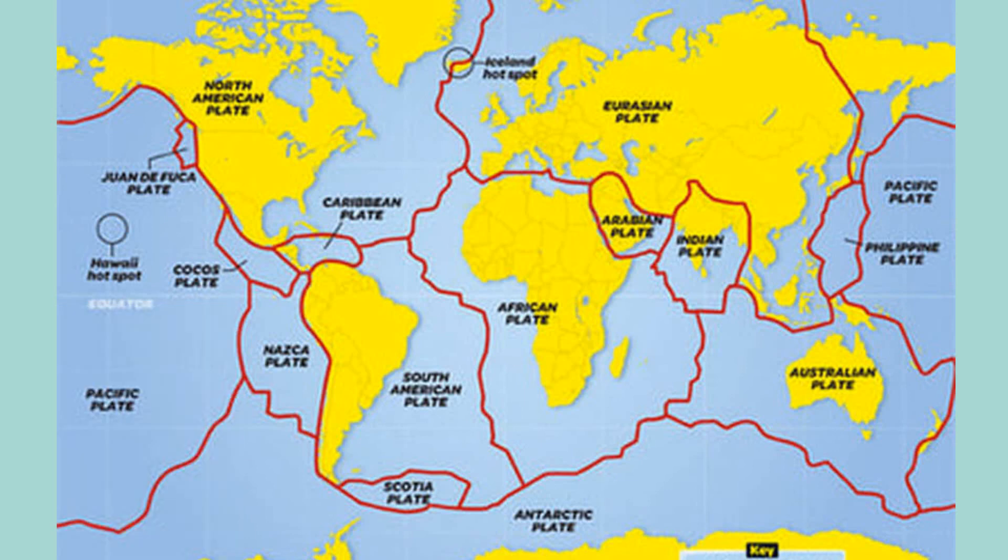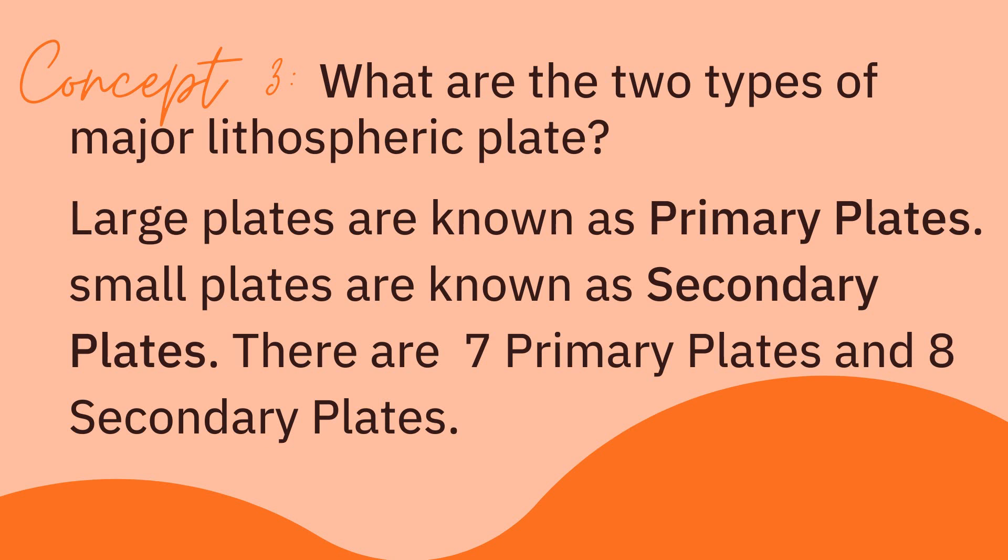For concept number three, the two types of plates are primary and secondary plates. Large plates are known as primary plates, and small plates are known as secondary plates. Remember the numbers 7 and 8 — we have 7 primary plates and 8 secondary plates.